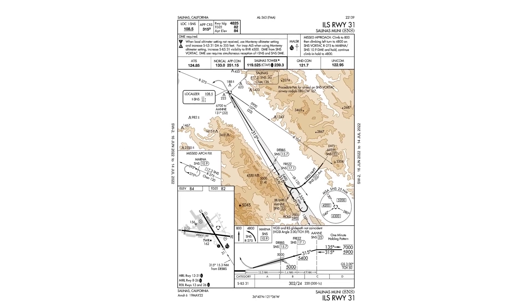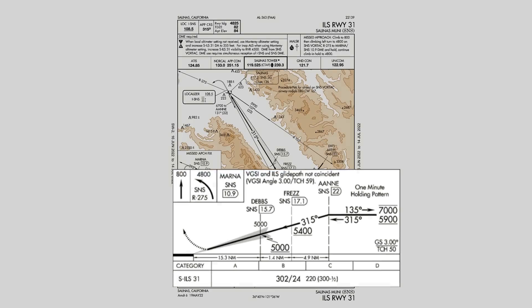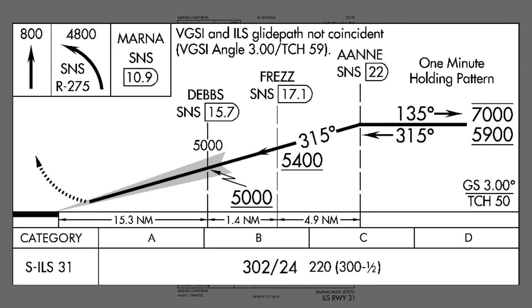First is the ILS into Runway 31 at Salinas. An ILS is a precision approach — it uses a localizer for lateral guidance and a glide slope for vertical guidance. This is important because it determines how we'll tell where the missed approach point is. On a precision approach like this one, the missed approach will commence when the aircraft is on the glide slope and reaches the decision altitude, listed in the minimum section here: 302 feet.